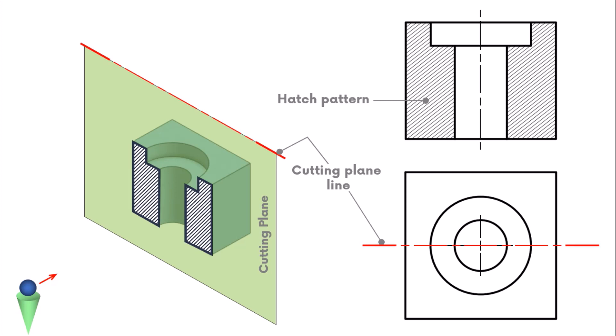Two arrows are placed at the ends of the cutting plane line to indicate the direction of site for the section view.